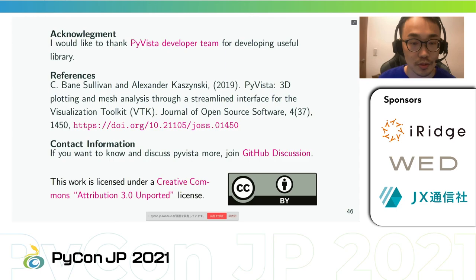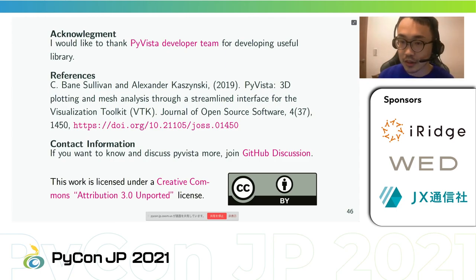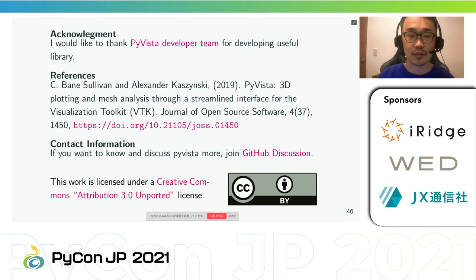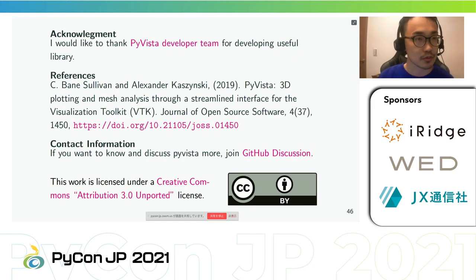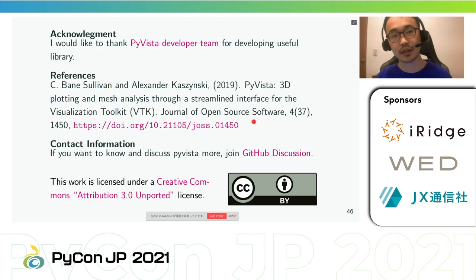Question: Thank you for the presentation. I learned that PyVista can handle various 3D data. As a beginner question — what are some use cases for PyVista? Answer: The most famous use case is FEniCS, a Python library for the finite element method, which officially adopted PyVista for its post-processing. That is probably the most well-known use case. Only three minutes left — any further questions?